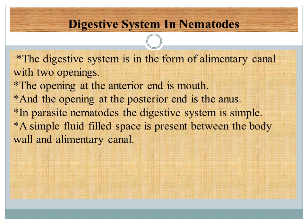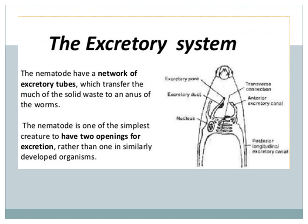Systems of Nematodes — Digestive system: the digestive system is in the form of a straight canal with two openings. The opening at the anterior end is the mouth, through which food is taken into the body. The opening at the posterior end is the anus, through which undigested food is removed. In parasitic nematodes the digestive system is very simple — a fluid-filled space is present between the body wall and the alimentary canal.